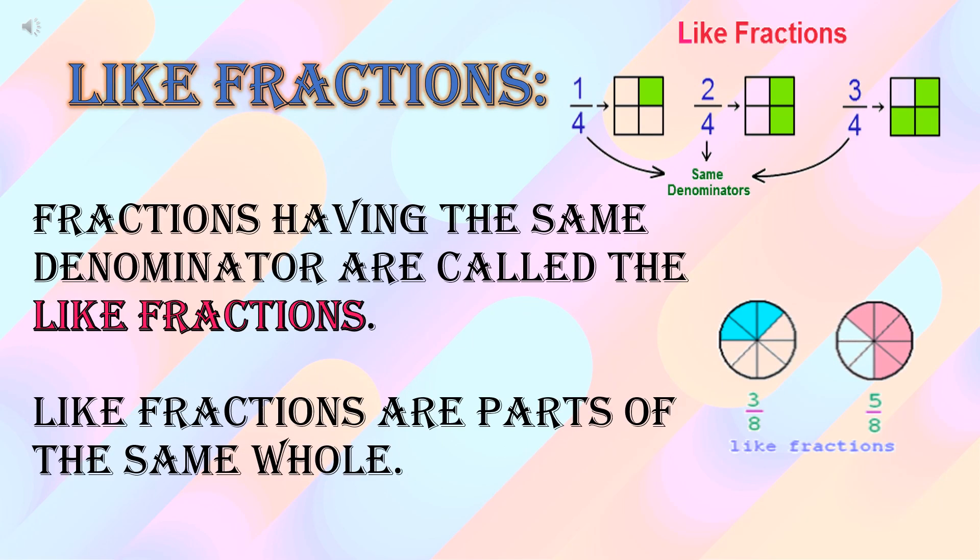First of all we will learn about like fractions. Fractions having the same denominator are called like fractions. Jin fractions ki denominator same hoote hain, unhye hum like fractions boolte hain. And children, like fractions are parts of the same whole — eek hi cheez ke equal parts hoote hain.